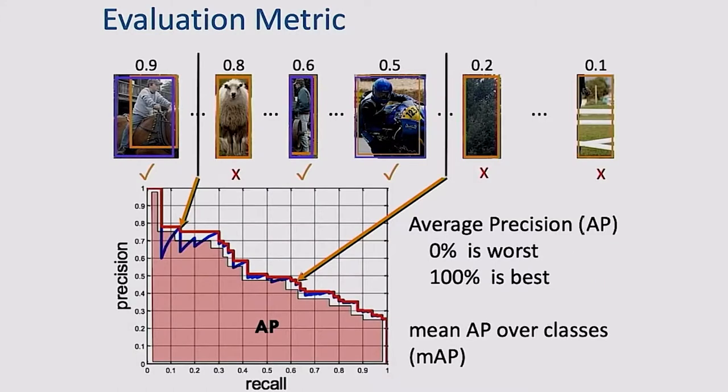Another important value in detection is recall — of all the ground truth bounding boxes, all the objects you're supposed to detect, how many did you actually detect? It is the ratio of true positives over all ground truth objects. Detection is the game of balancing precision and recall. You can achieve high recall by lowering the threshold, detecting more objects, but this may lower precision. Conversely, you can restrict to very confident detections for high precision but low recall. By varying the threshold, you can plot a precision-recall curve.